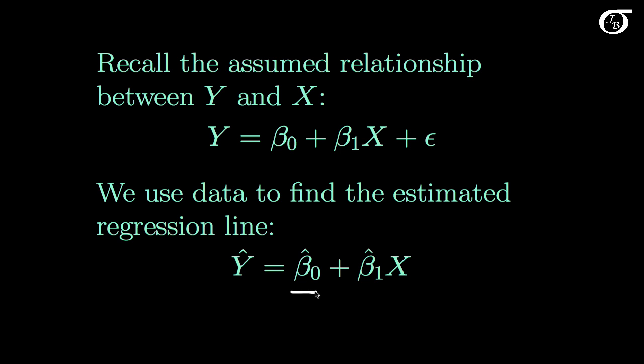Beta0 hat is a statistic that estimates the parameter beta0, and beta1 hat is a statistic that estimates the parameter beta1. The question now is what are we going to use for beta0 hat and beta1 hat? How are we going to choose them wisely so that we have a good regression line?